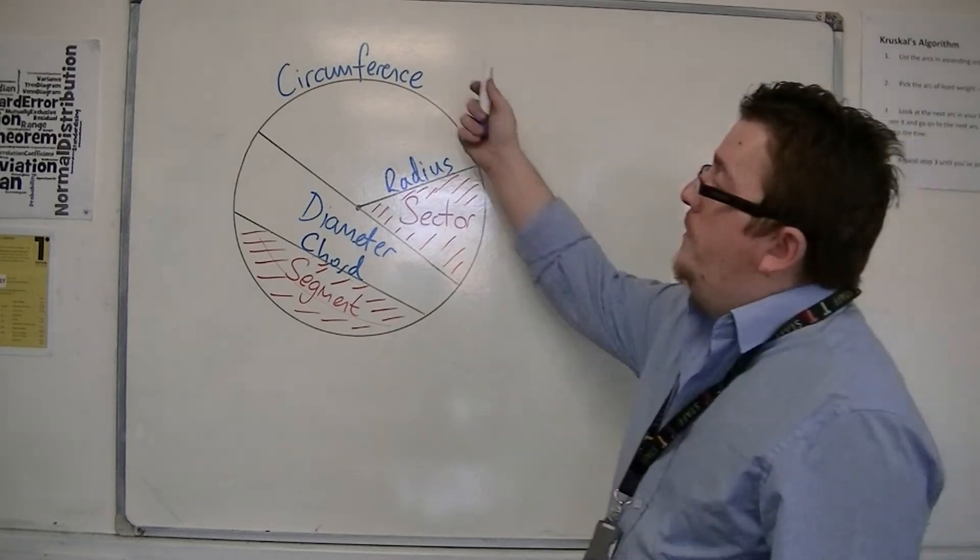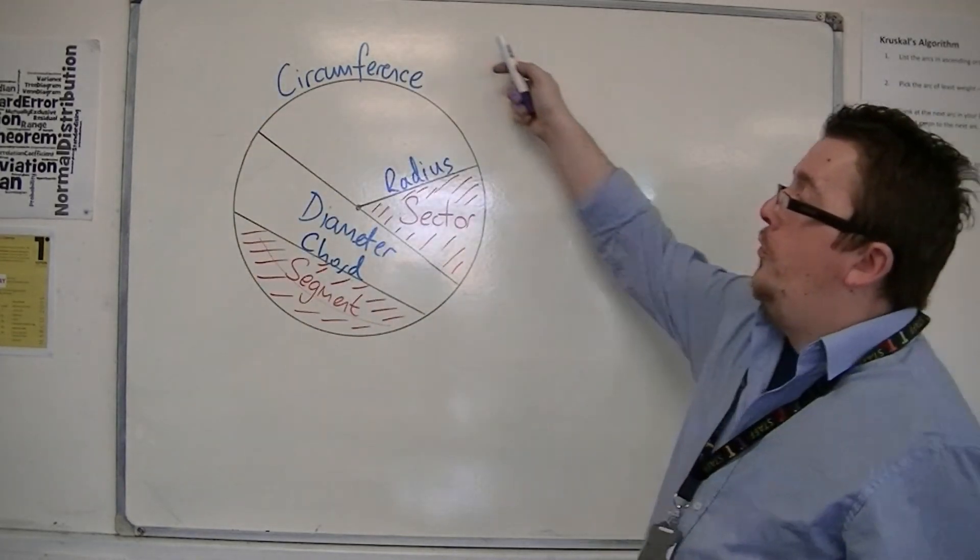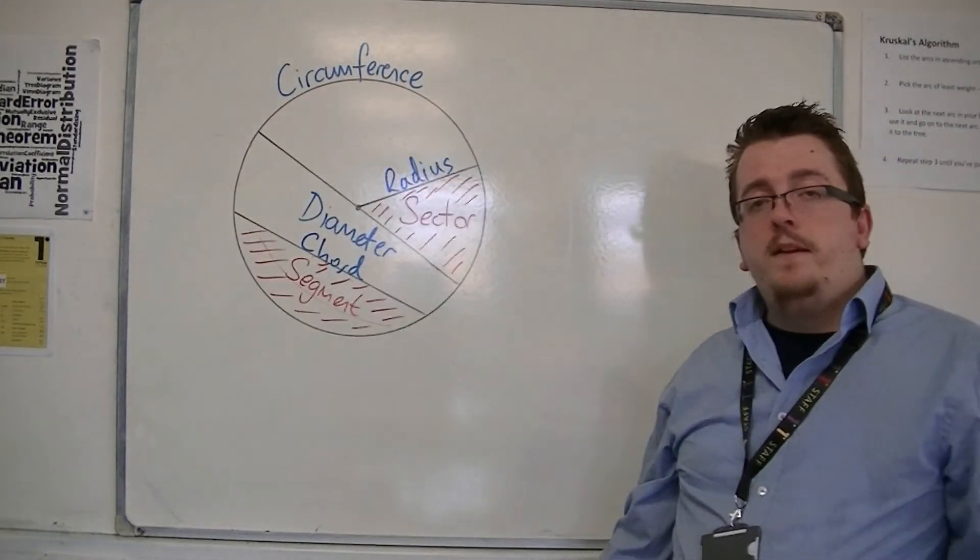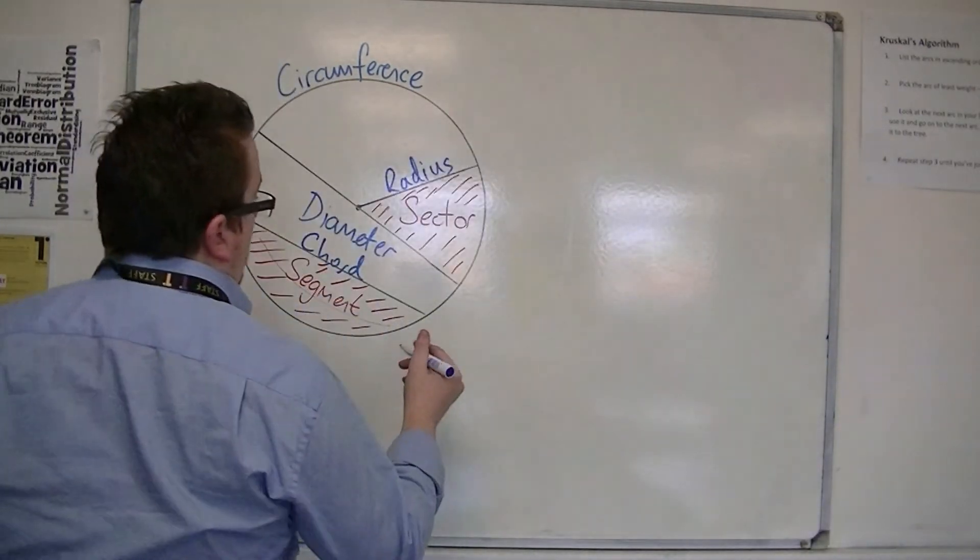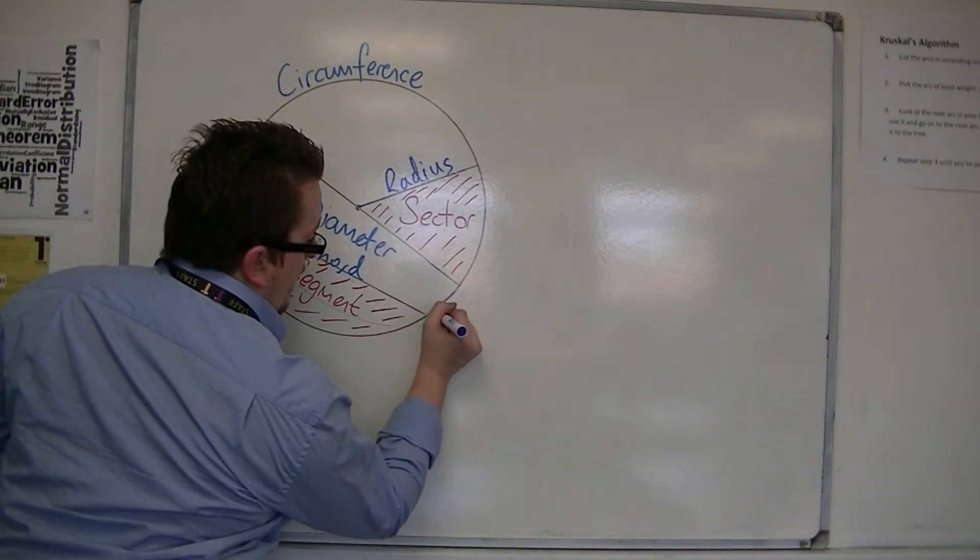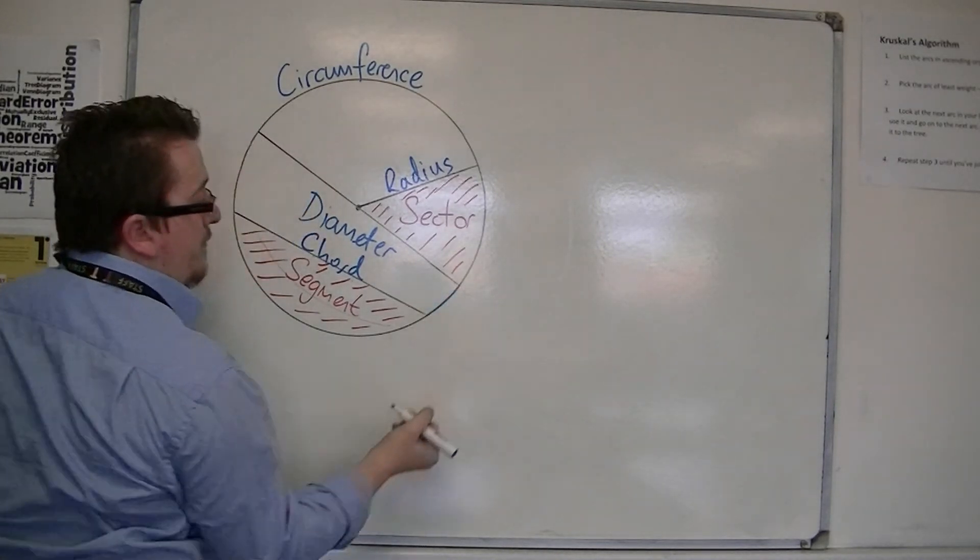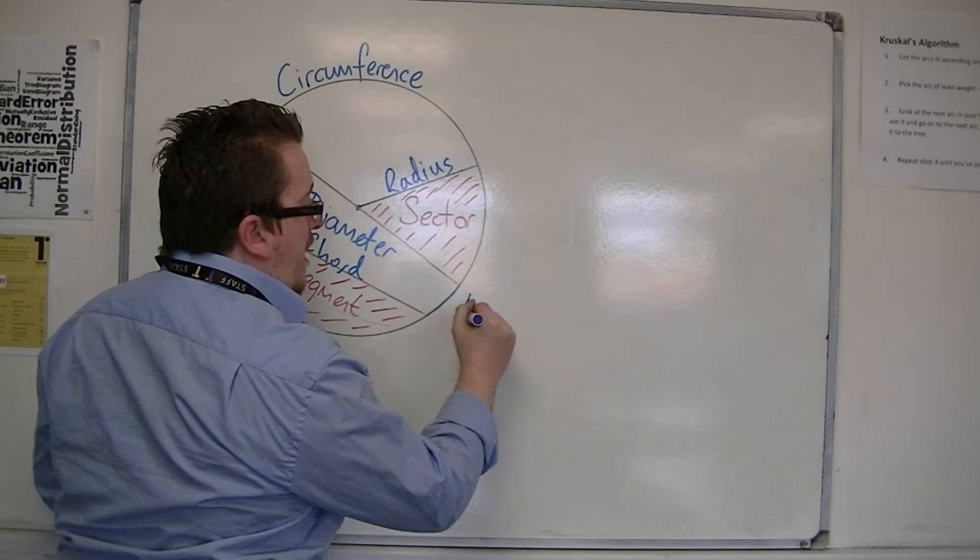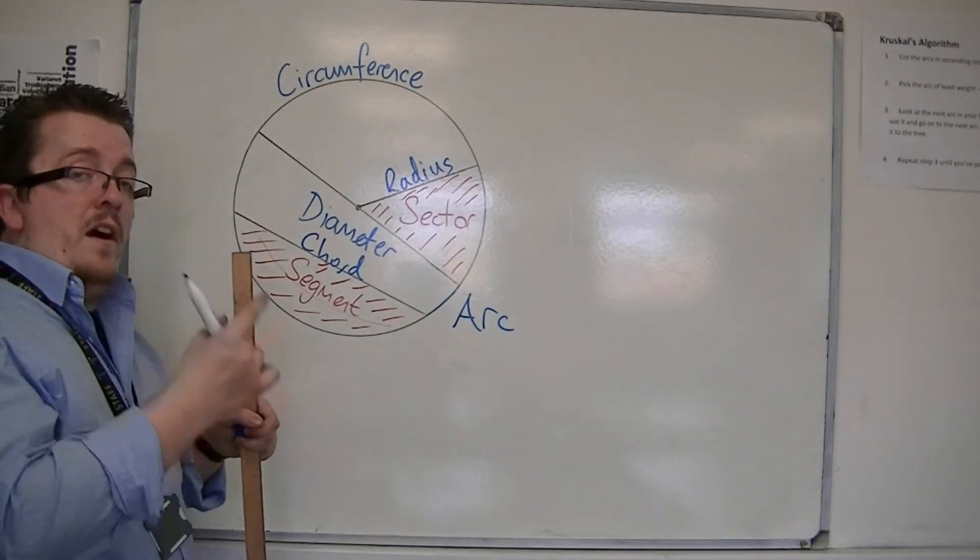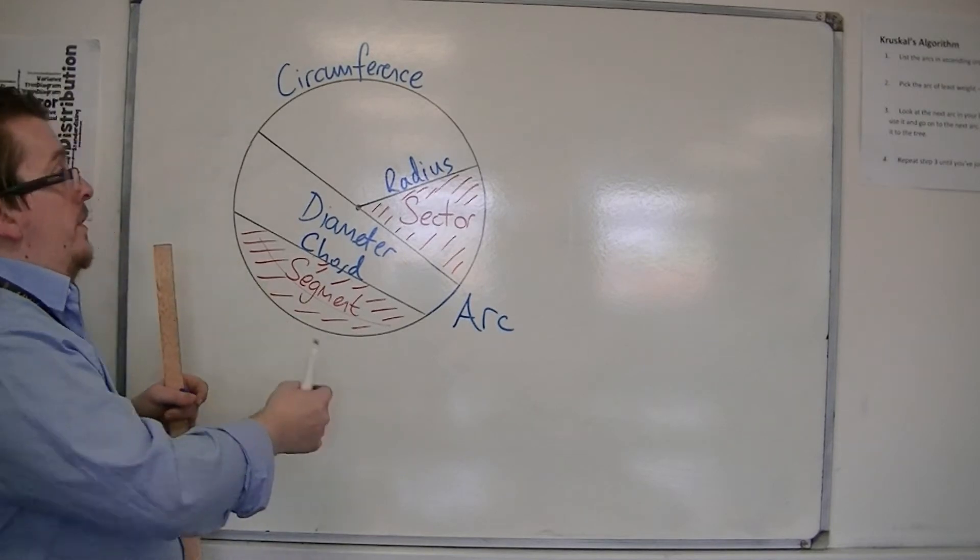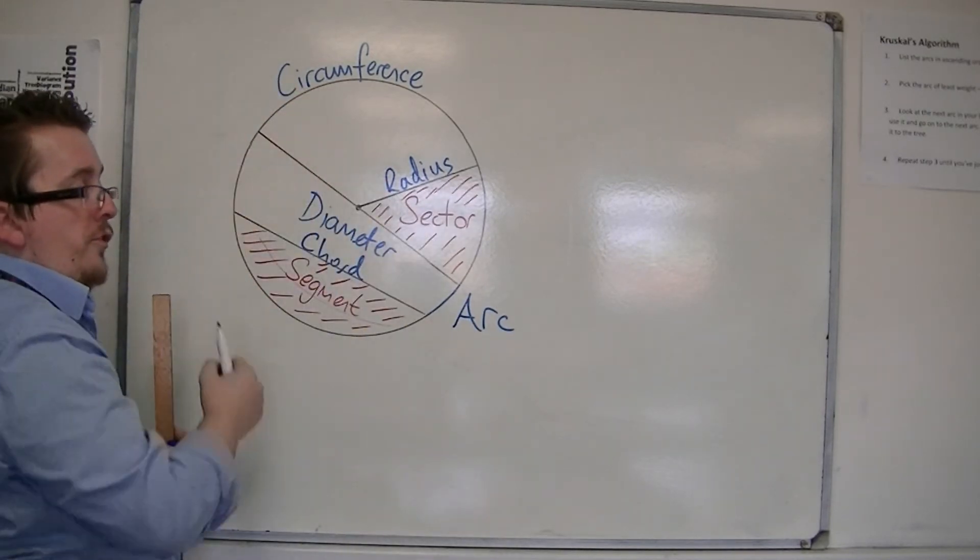Now beforehand, we knew that the circumference is going all the way around the outside. If we don't quite make it, and we're just looking at a particular part of the outside of the circle, so let's say just that bit there, then that is known as an arc. So an arc is any length of the circumference, but not the whole thing.